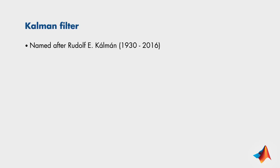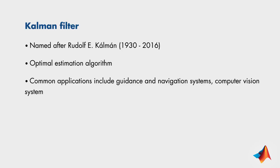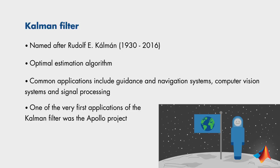Let's look at some facts about Kalman filters. The Kalman filter is named after Rudolf Kalman, who is the primary developer of its theory. It is an optimal estimation algorithm that predicts a parameter of interest, such as location, speed, and direction, in the presence of noisy measurements. Common applications of Kalman filters include guidance, navigation, and control systems, computer vision systems, and signal processing. One of the first applications was in the 1960s — engineers used it in the Apollo project, where the Kalman filter was used to estimate trajectories of the manned spacecraft to the moon and back.